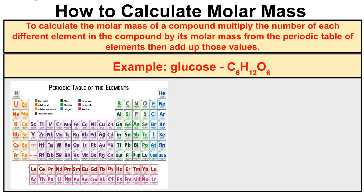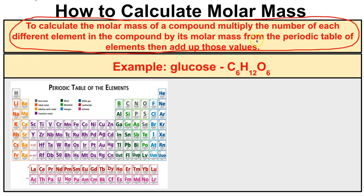How do you calculate molar mass? To calculate the molar mass of a compound, we simply multiply the number of each different element in the compound by its molar mass from the periodic table of elements, and then simply add up those values.